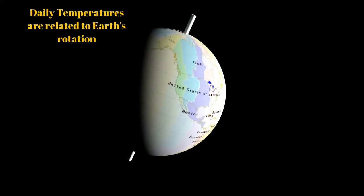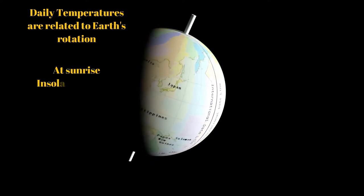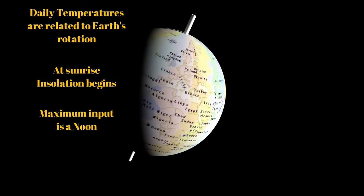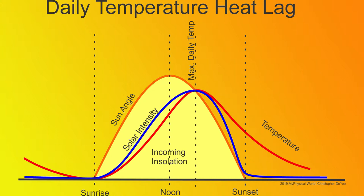The daily cycle of temperatures on Earth is related to its rotation. At sunrise, insolation begins. It reaches its maximum at noon and stops at sunset. However, there is a heat lag in which the maximum temperatures are reached mid-afternoon because the input insolation is continually added until the sun angle decreases enough for the output to overtake the input. The lowest temperatures of the day occur just before sunrise.